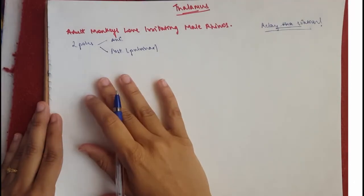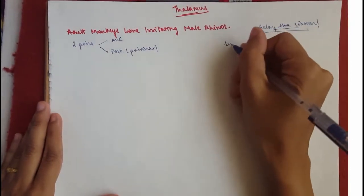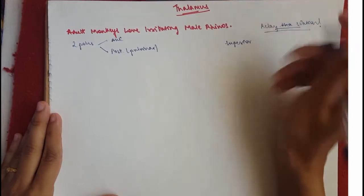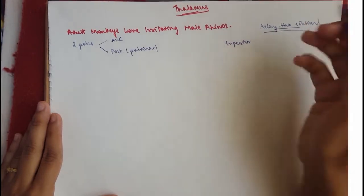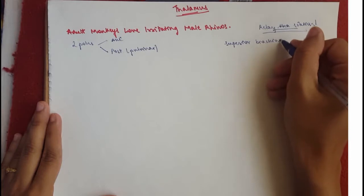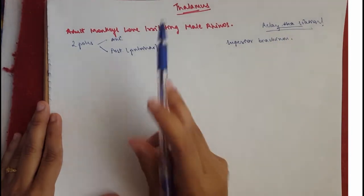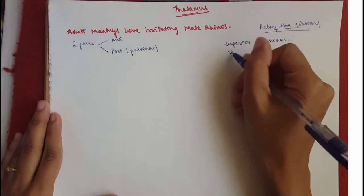So the thalamus is separated from the metathalamus by the superior brachium. Now the superior brachium comes from the superior colliculus which is in the midbrain and it's to do with the visual cortex. And it is also separated from the caudate nucleus by stria terminalis.